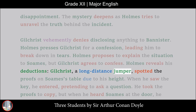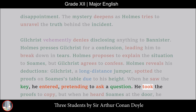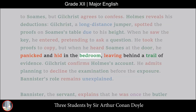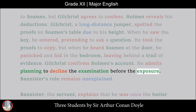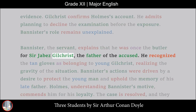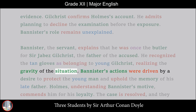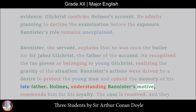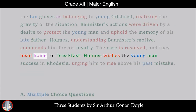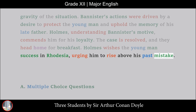Holmes reveals his deductions: Gilchrist, a long-distance jumper, spotted the proofs on Soames' table due to his height. When he saw the key, he entered, pretending to ask a question. He took the proofs to copy, but when he heard Soames at the door, he panicked and hid in the bedroom, leaving behind a trail of evidence. Gilchrist confirms Holmes' account and admits planning to decline the examination before the exposure. Bannister explains he was once the butler for Sir Jabez Gilchrist and recognized the tan gloves as belonging to young Gilchrist. His actions were driven by a desire to protect the young man and uphold the memory of his late father. Holmes commends Bannister for his loyalty. The case is resolved and they head home for breakfast. Holmes wishes the young man success in Rhodesia, urging him to rise above his past mistake.